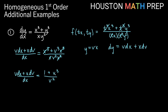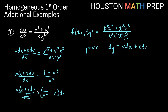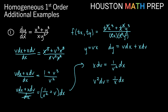After reducing, we have (v dx plus x dv) over dx equals (1 plus v cubed) over v squared. We split that into 1 over v squared plus v. Now we separate variables: multiply dx to the other side, then subtract v dx from both sides to get x dv equals (1 over v squared) dx. We multiply v squared across and divide by x, getting v squared dv equals (1/x) dx.